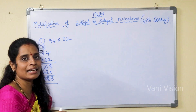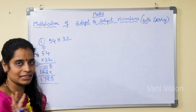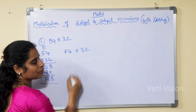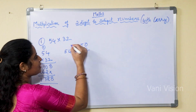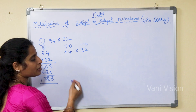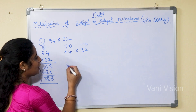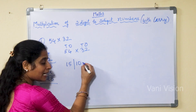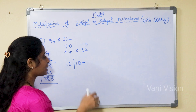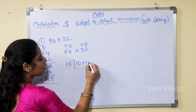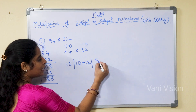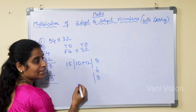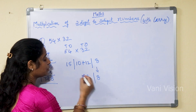Now that one I am going to explain in an easy way. So for 54 into 32, we use ones and tens positions. First we multiply 5 into 3 — that is 15. Then 5 twos are 10. We have to add those. Then 4 threes are 12. Then 4 twos are 8. Write 8 as it is, then 10 plus 12 is 22 — write as it is. Then 15.